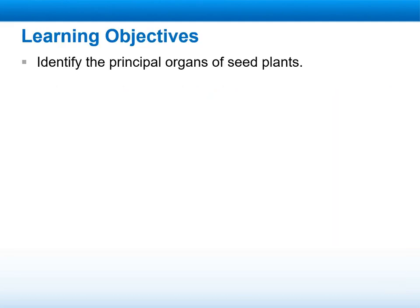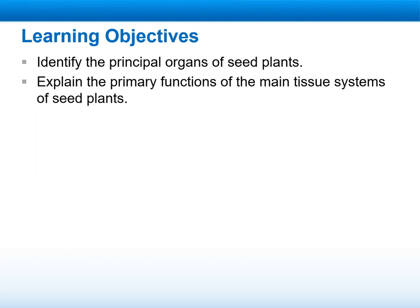During this week, we will identify the principal organs of seed plants, meaning that we will talk more specifically about the structure and how the function of each seed plant differs from one type of plant to another. We will explain the primary function of the main tissue systems of seed plants, going deeper into the tissue of each part of the plant cells and the main tissue systems found in each one of them, especially in the seed plants.